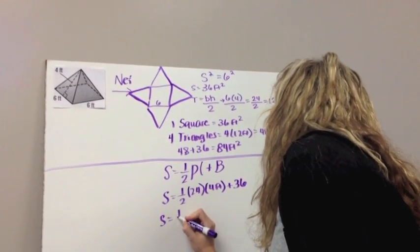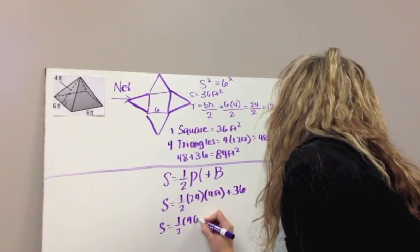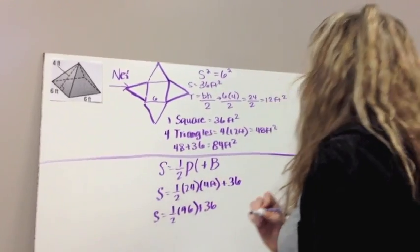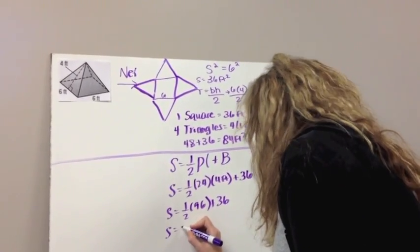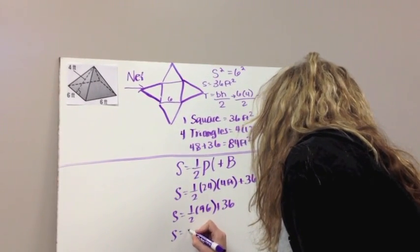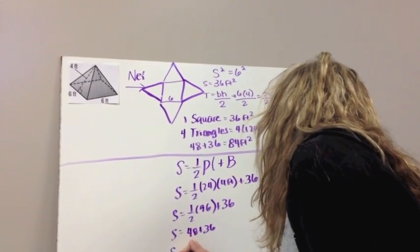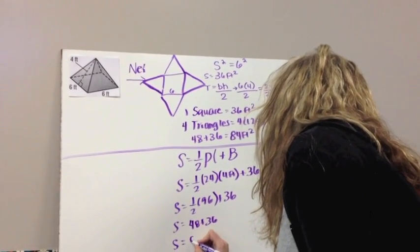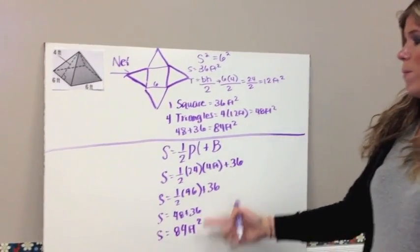Then we simply do our math. 1 half, 24 times 4 is 96, plus 36, and break it down again, and we have 48 plus 36, and we have our total surface area of 84 feet squared. So you see I got the same answer for both methods.